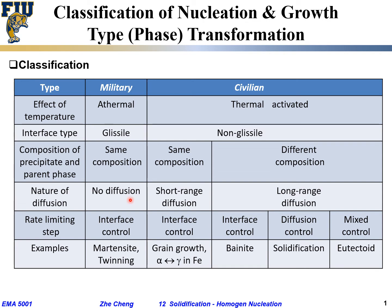Diffusion is when atoms move pretty much randomly — you cannot predict how individual atoms move or which direction they go. For civilian transformations, there will be diffusion, depending on whether it's short-range or long-range. Long-range means across many grains; short-range means within a few grains.